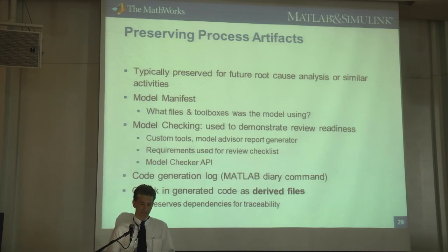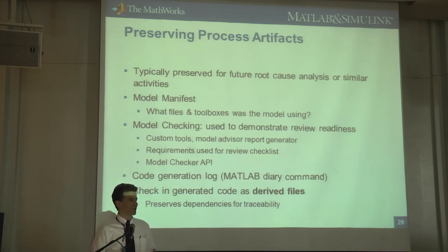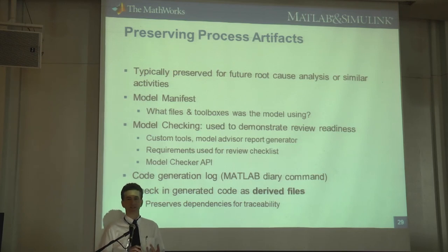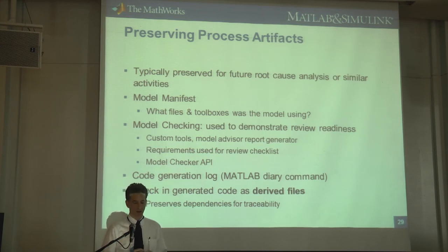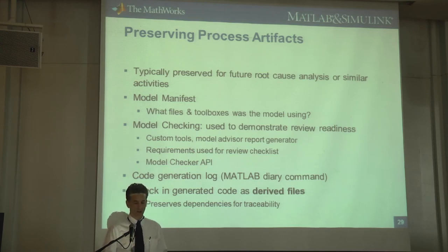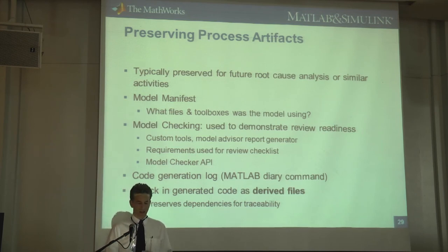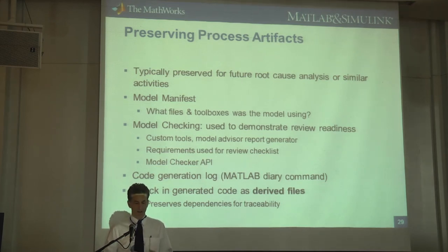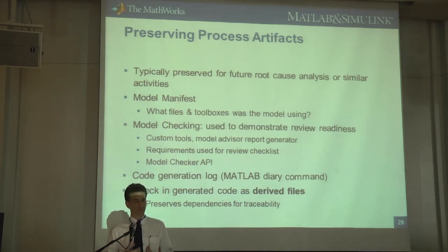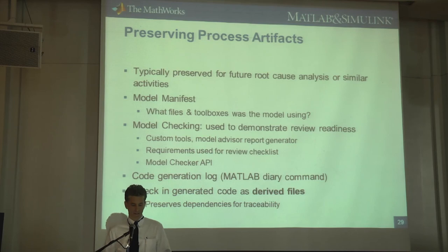Beyond the model itself, there are process artifacts to preserve when something goes wrong. These include model manifests — giving the full list of everything that went into the build — model checking results, any custom tools built, and requirements. Additionally, items often considered derived but which should be kept are the code generation logs, code checks, and derived files.